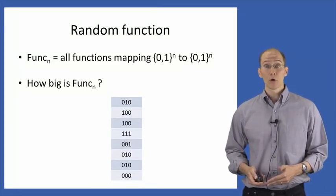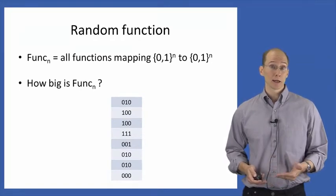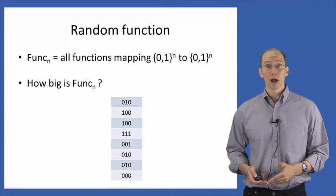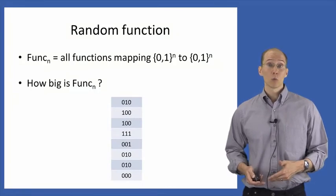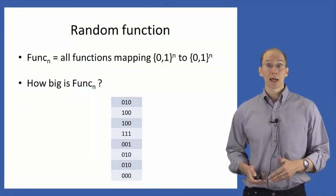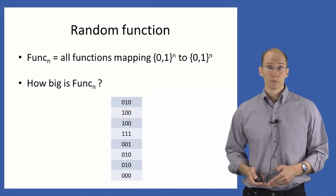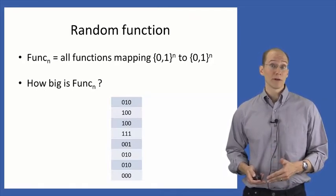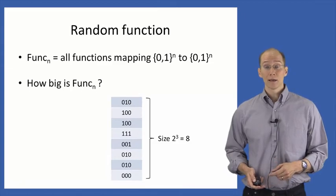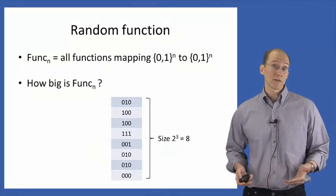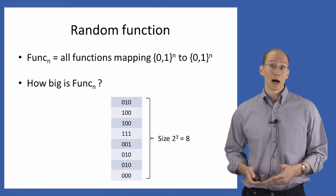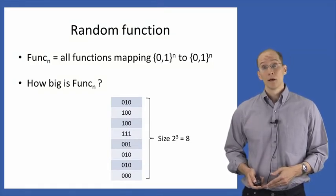Just as before, we can say that the first input, i.e. 000, maps onto the first value in this array, i.e. 010, and so on, up until the last possible 3-bit input, 111, which maps onto the last element of this array, in this case 000. So we have this array containing 3-bit values, and this array is of size 2 to the third, because we have all possible 3-bit inputs — there are 2^3 such inputs, so we have a total of 8 values in our array.